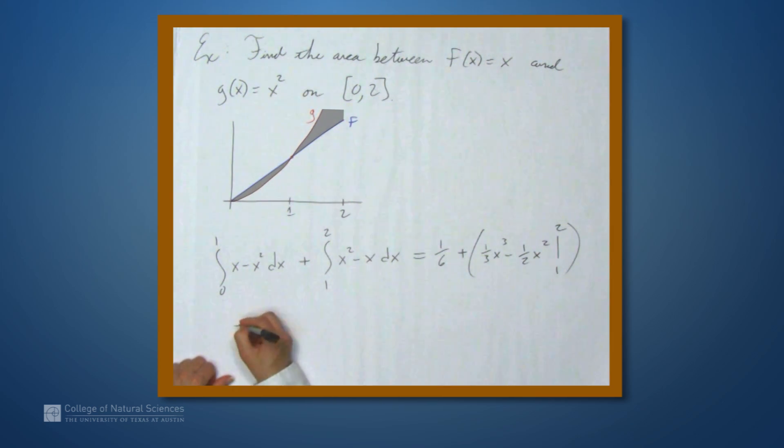And when we evaluate this, we get 1 sixth plus, we plug in 2, we get 8 thirds minus 4 halves. So this simplifies to 4 sixths plus 1 sixth. When we plug in 1, we get 1 third minus 1 half.